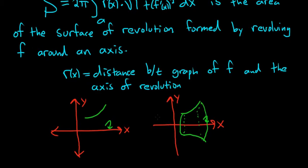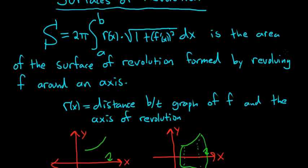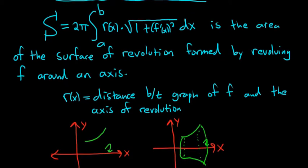If you look at the formula, it looks very similar to the arc length formula. The arc length formula is almost the same except here you have this extra r and this 2 pi. So it's kind of like you're taking the arc length and then multiplying it and giving it a radius. That's the formula for surfaces of revolution.